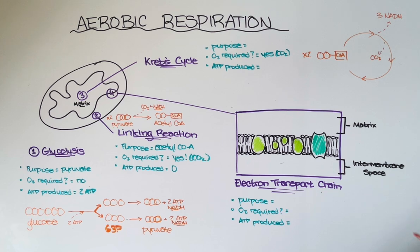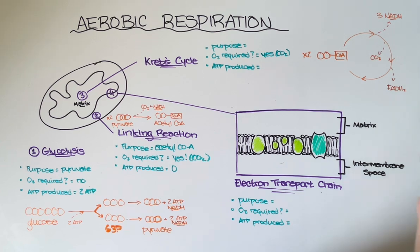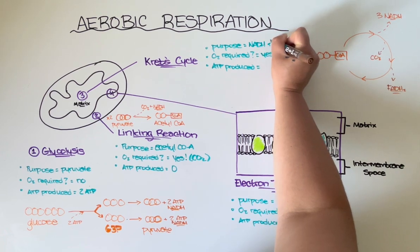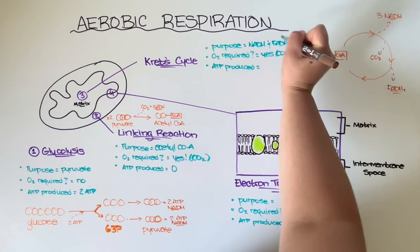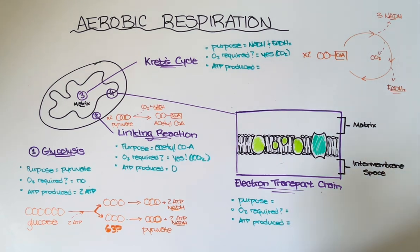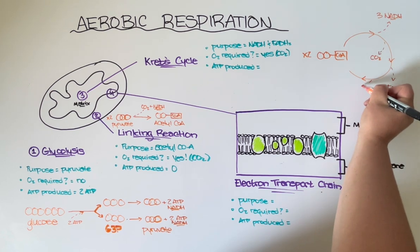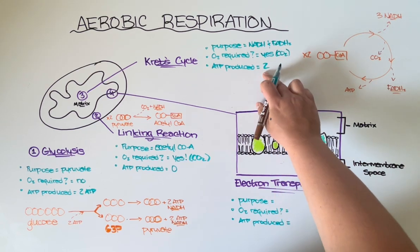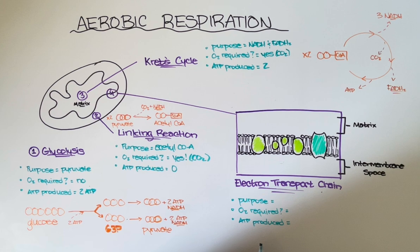Another set of reactions in the Krebs cycle produces a molecule called FADH2. FADH2 is similar to NADH in that it's a high-energy compound. In fact, these two molecules are the main purpose of the Krebs cycle — we want to make NADH and FADH2 because those high-energy molecules are going to donate their electrons to power the electron transport chain. Lastly, a small number of ATP molecules are also produced during the Krebs cycle — since it happens twice, there are technically two ATPs, which means we have two ATPs produced in total from the Krebs cycle, which really is not a lot.